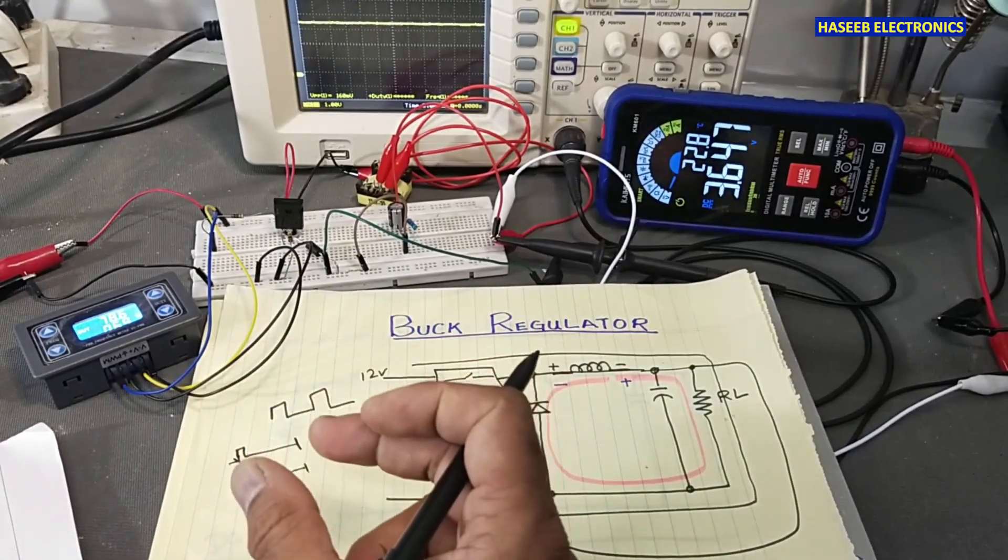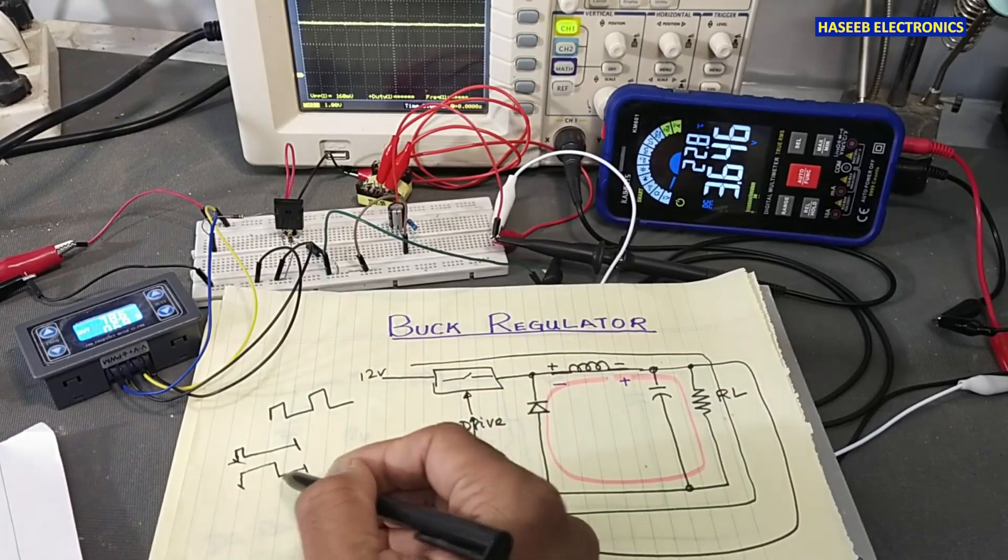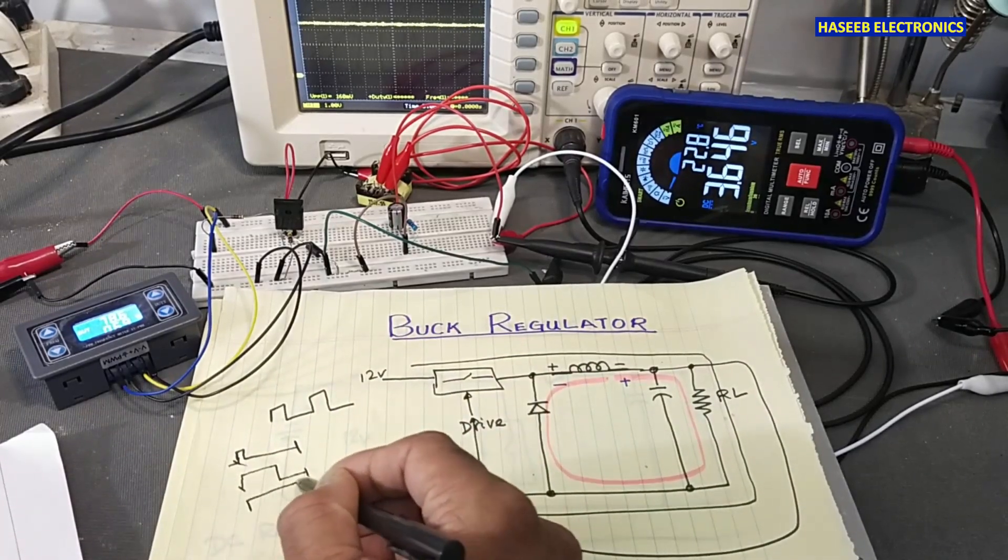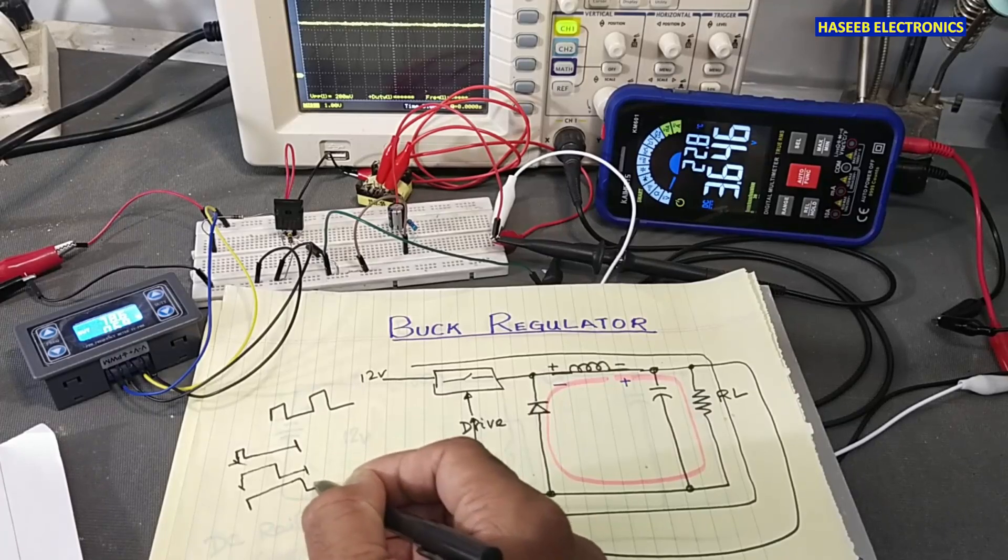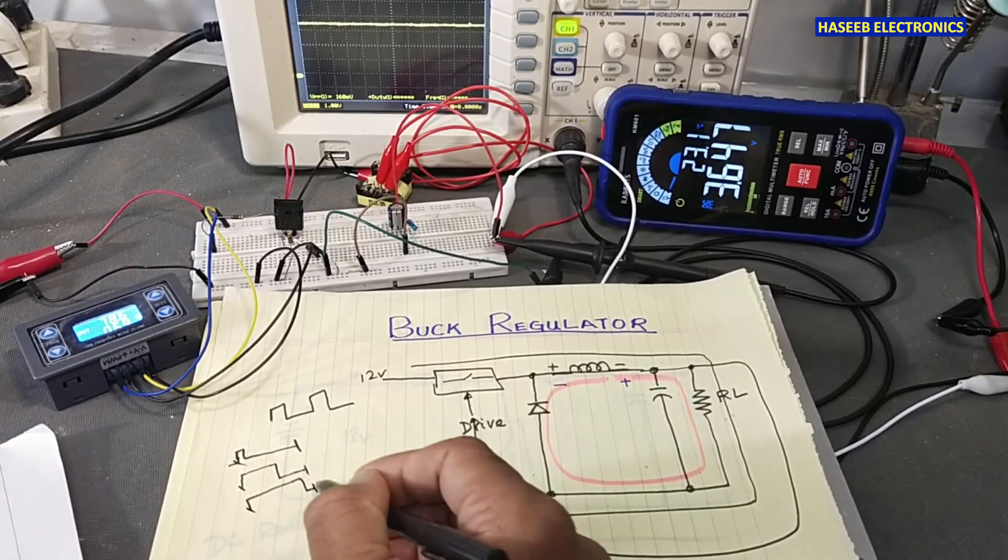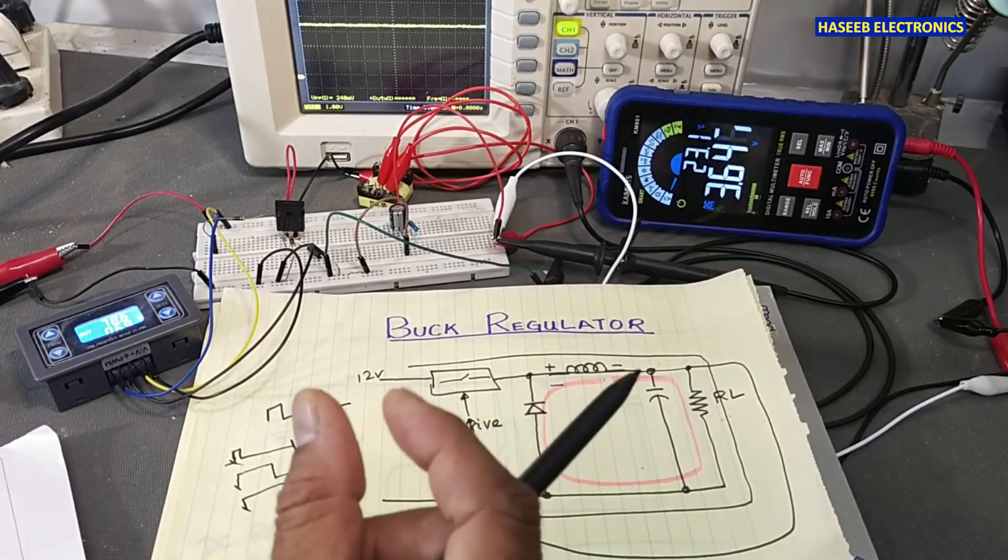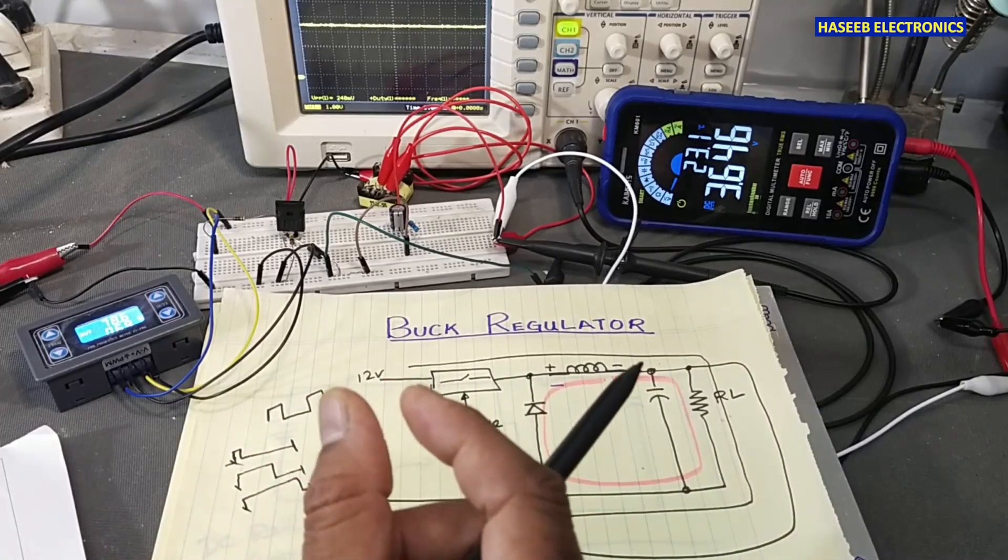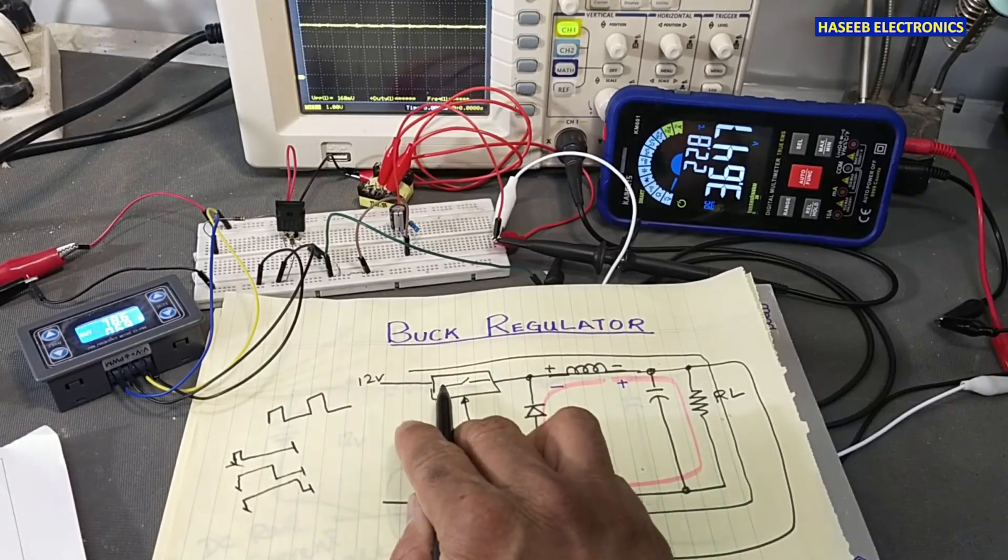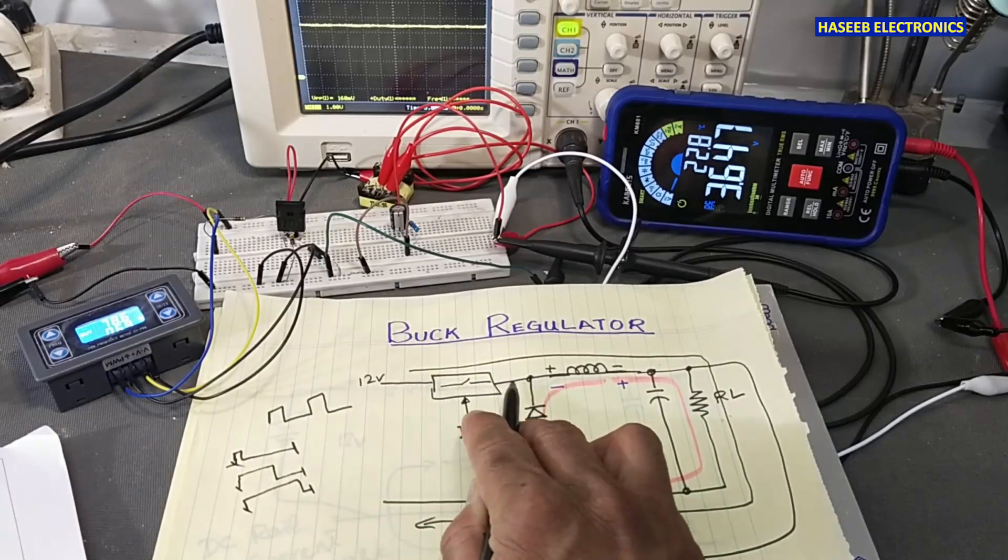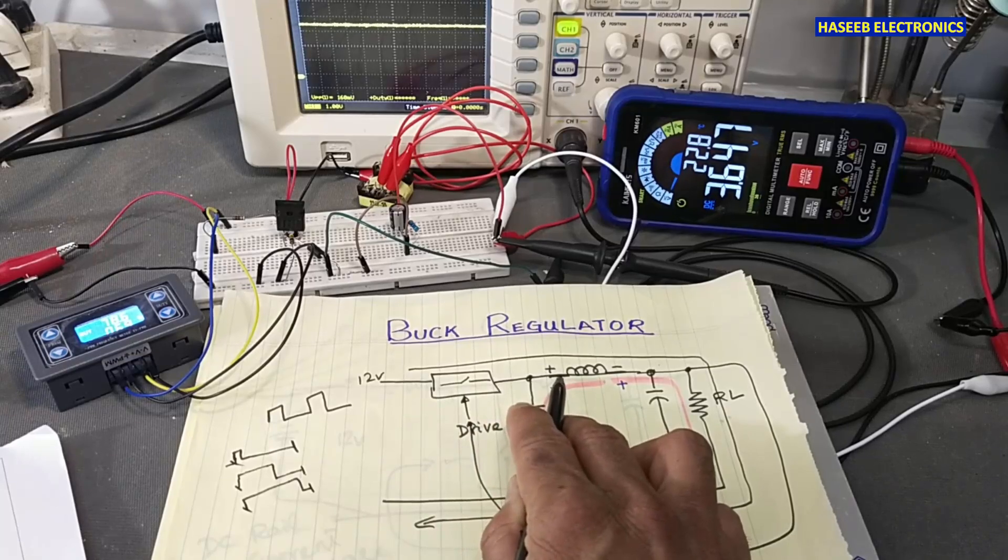Maybe next time it will turn on 90 percent and 10 percent off, or 10 percent on. How large or how small this pulse will pass through this switch, it will reach to this inductor.